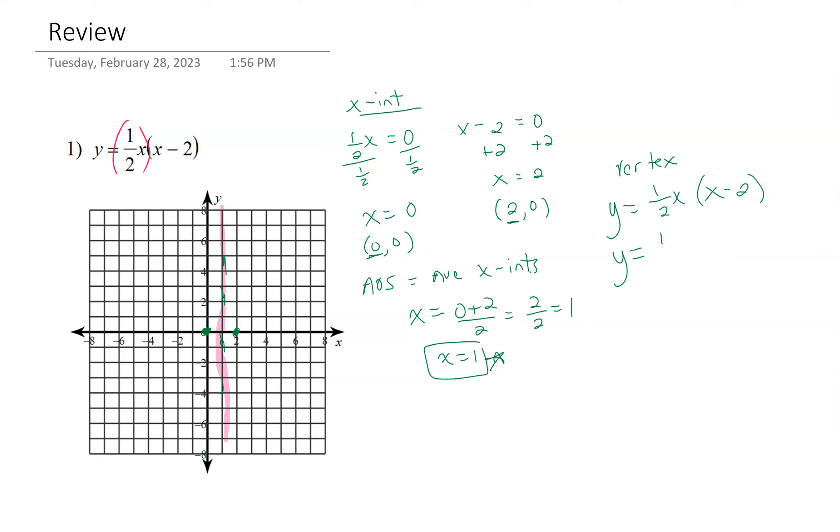So we're going to do y equals 1 half times 1, and then times 1 minus 2. Be careful to do the order of operations. We're going to do the parentheses, 1 minus 2, and we can multiply these two outside at the same time. So 1 half times 1 is 1 half, and then 1 minus 2 is negative 1, and 1 half times negative 1 is negative 1 half.